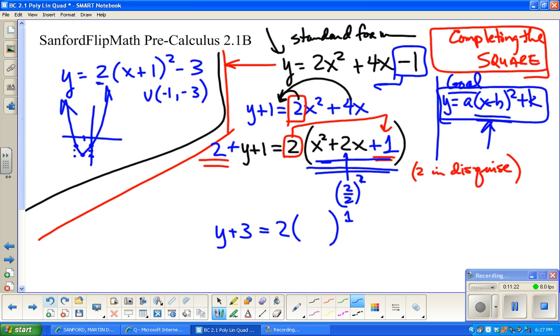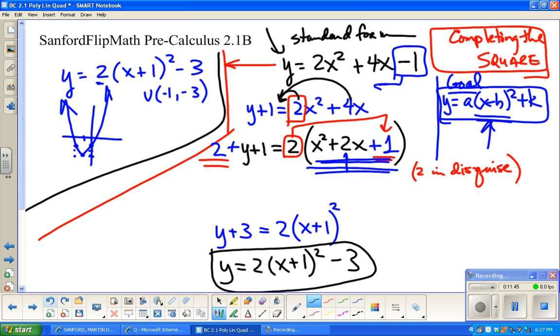Let's just put together what we got so far. Remember that this is going to factor now into (x+1)². One more step and then this problem is done. I want y equals, so I'm going to subtract 3 from both sides. That's it.